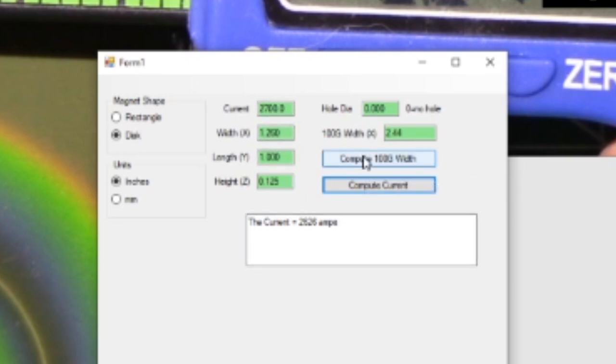But the other thing you could do is if you had know your current magnet's current, you can tell it to compute what the diameter would be, where the 100 gauss distance would be. And that comes to 2.466 inches. Again, if you put it in millimeters, it's 62 millimeters. So yeah, this thing converts the units for you too. But it sometimes doesn't round everything perfectly.